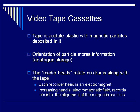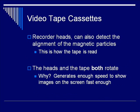Conversely, using very low voltages, the electromagnetic head can detect the alignment of the existing particles, which is how the videocassette tape is played. The heads and the tape both rotate quite rapidly, because this is the only way to generate enough speed to show images in relatively close to real time.